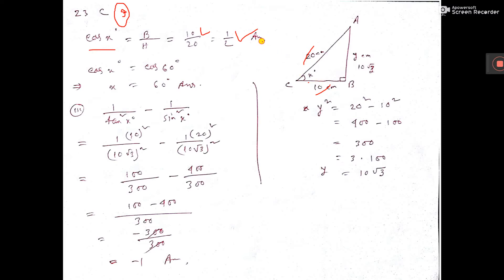So from the diagram we have calculated cos x degree. Now this half means cos 60 degree, cos cos cancel. Then what is the value of x degree? 60 degrees. See, the angle we have got is 60 degrees, the answer.